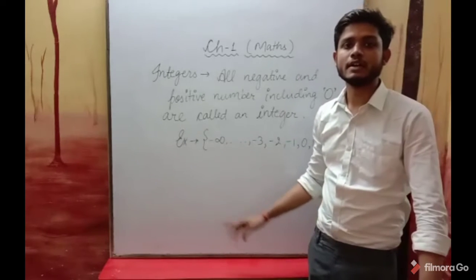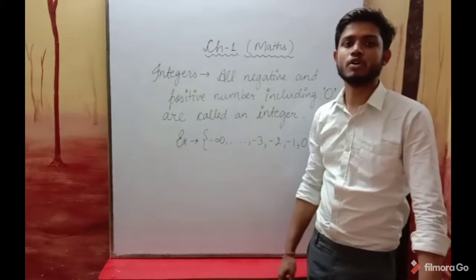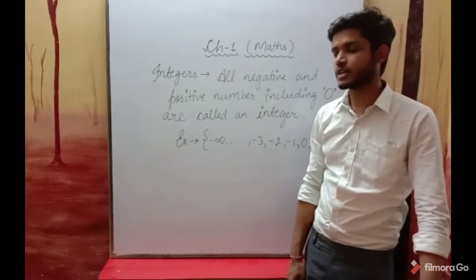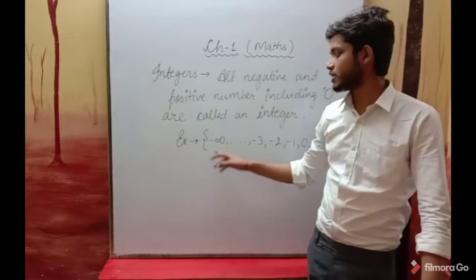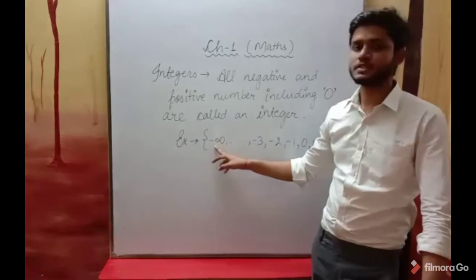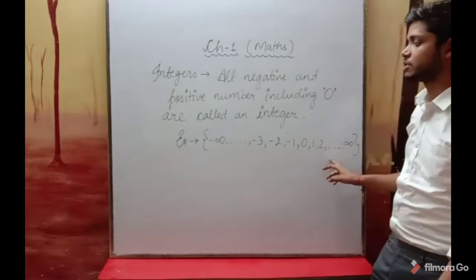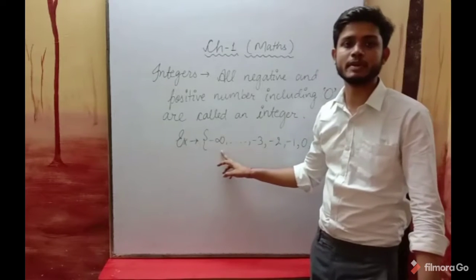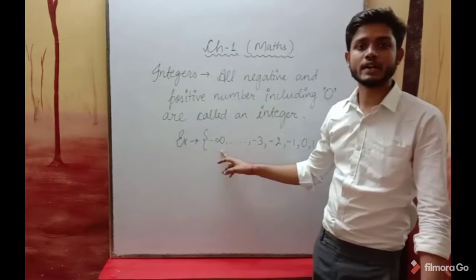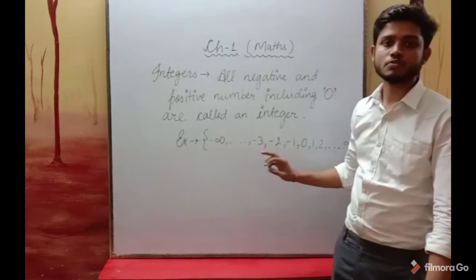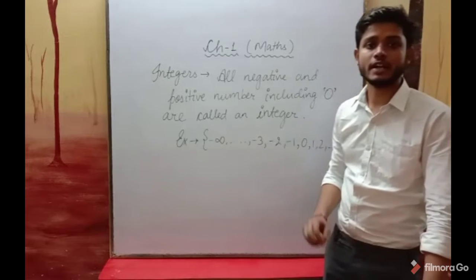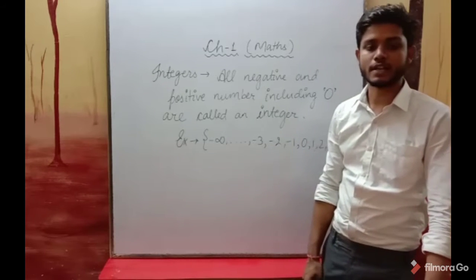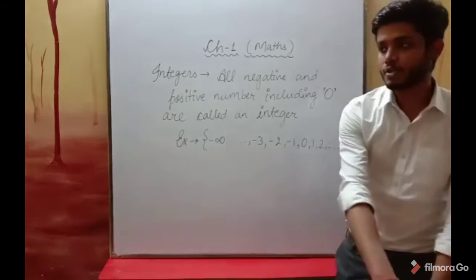Since we know that numbers are uncountable, we cannot count them. So the number line starts from minus infinity and ends at positive infinity. All positive and negative numbers along with zero — all of these are called integers.